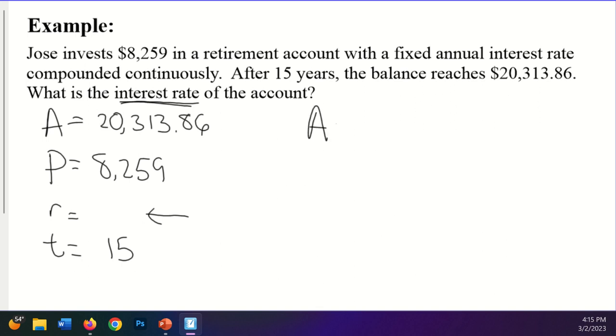So what I'll do is I'll start with my A equals PE to the RT and I will plug in what I know. So I've got this 20,313.86 is equal to 8,259, E to the R times 15. Okay. So I want to solve for this R right here. So I'm going to do something similar to what we did in the last one, where I want to take the LN of both sides. But before I can do that, I'm going to have to divide. I need to get this coefficient here to be 1. So I'm going to divide by 8,259.